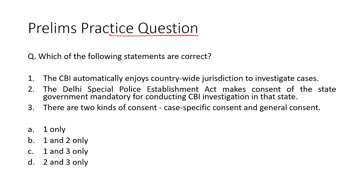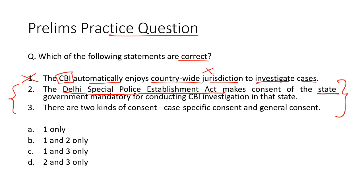Now let's take up the next question. Which of the following statements are correct? The CBI automatically enjoys country-wide jurisdiction to investigate cases. This statement is clearly incorrect because the CBI does not automatically enjoy country-wide jurisdiction. Jurisdiction has to be individually granted by each state, and this provision is contained in the Delhi Special Police Establishment Act. The second statement — that the Delhi Special Police Establishment Act makes consent of the state government mandatory for conducting CBI investigation in that state — is correct. The third statement says that there are two kinds of consent: case-specific consent and general consent. This statement is also correct, so option D is the right answer.